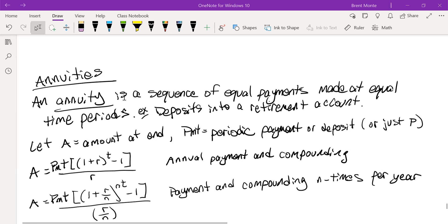What an annuity is, it's a sequence of equal payments made at equal time periods. So for example, if we're making deposits into a retirement account, that would be an annuity.